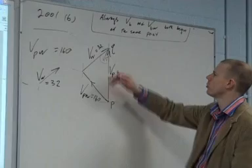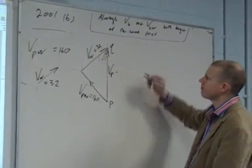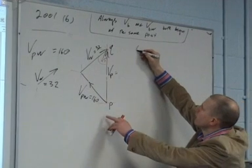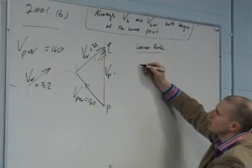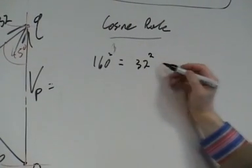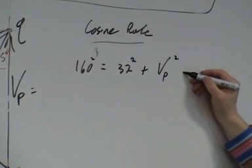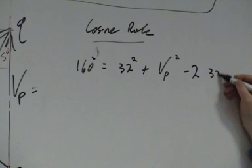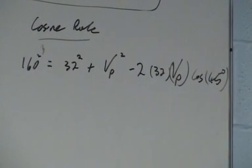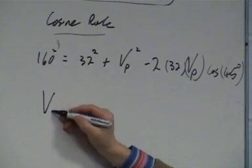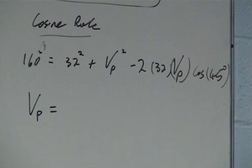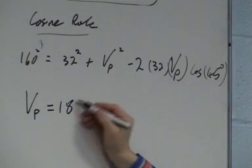In this case, if we wanted to find out what V_P was, what do we do? If we use cosine rule. 160 squared equals 32 squared plus V_P squared minus 2 times 32 times V_P times the cos of 45. And you work all of that out, and you get an answer for V_P as 181 something. 181 I think it is. So V_P is 181.